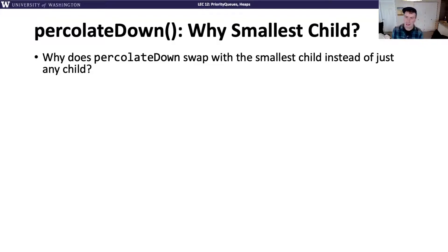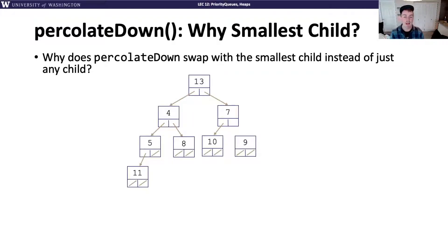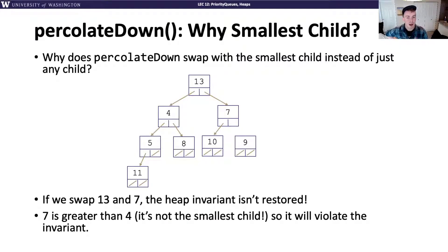You might be wondering, in this percolate down operation, why are we always swapping it with the smallest child? Can't I just swap it with any child, maybe? It turns out that this smallest child part of the algorithm is really important. For example, suppose in that earlier example, we put the 13 at the top, and suppose I wanted to switch the 13 and the 7. If I swap 13 and 7, then I haven't fixed my heap invariant, because 7 has a left child that's 4. 4 is less than 7, which means I've broken the heap invariant. It turns out, by always swapping with the smallest child, you can't ever re-break that invariant again. You might have to keep percolating that value you originally put up down, but you don't have to go back and fix anything else in the tree, which is really great.